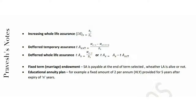Fixed term marriage endowment: the sum assured is payable at the end of the term selected, whether the life assured is alive or not. Educational annuity plan: for example, a fixed amount of 2 per annum, paid half-yearly, provided for 5 years after expiry of n years. Thanks for watching.